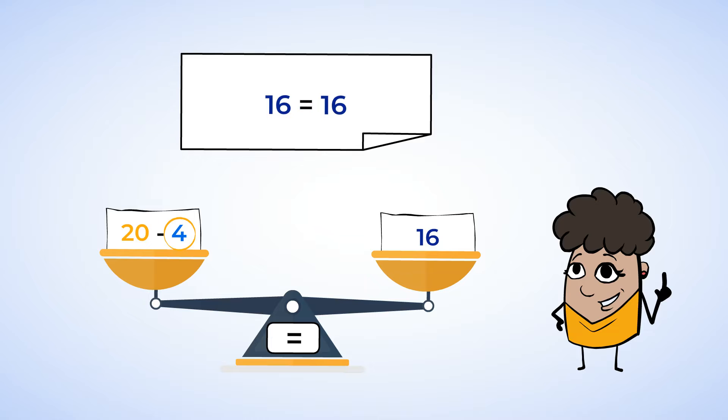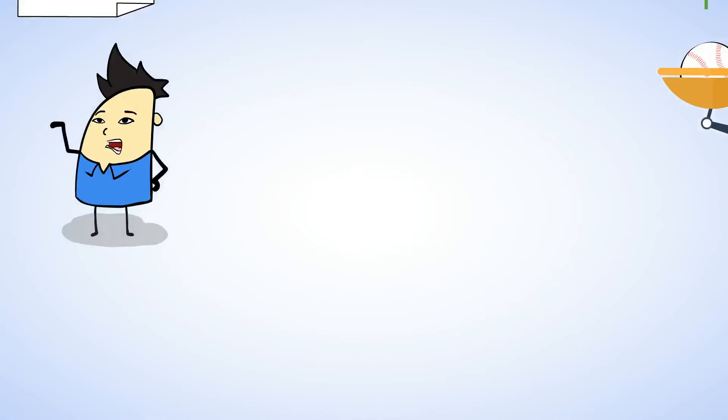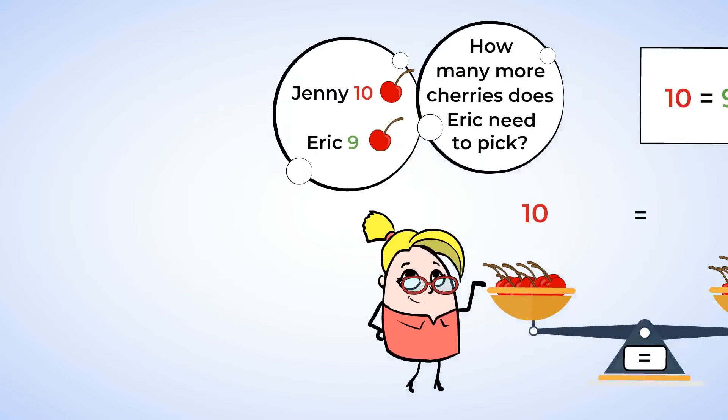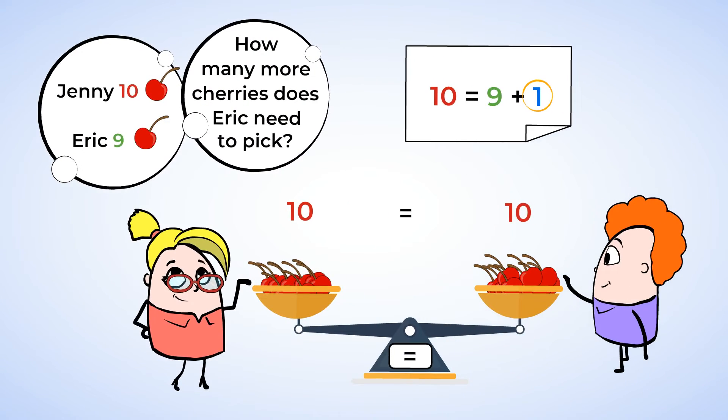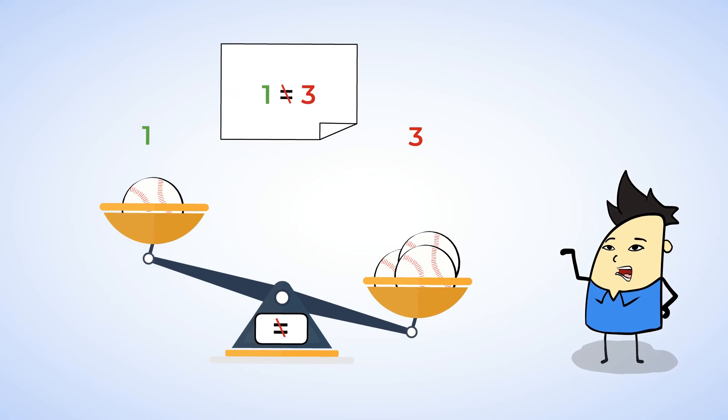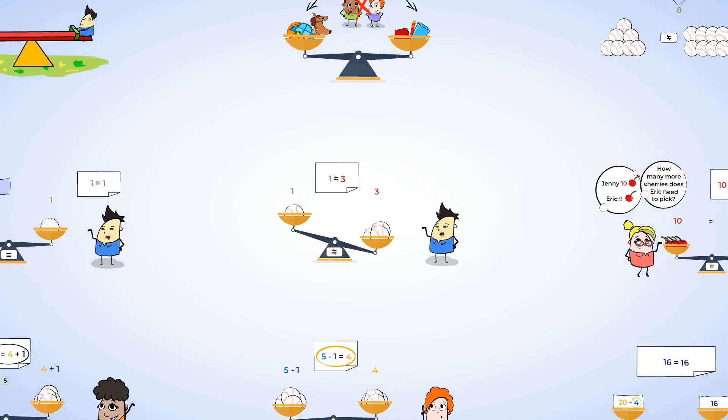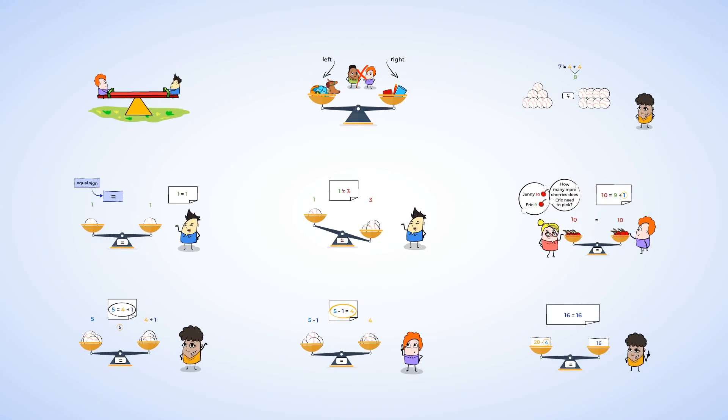And we found the missing number that keeps our scale balanced. Fantastic work. And now, let's recap. You learned that we used an equal sign to show that two sides have the same amount. The left side of the equal sign must be the same as the right side of the equal sign. And if not, the equation is not correct. You did a great job balancing scales and using the equal sign. And I'll see you in the next lesson.